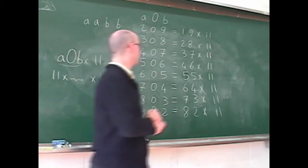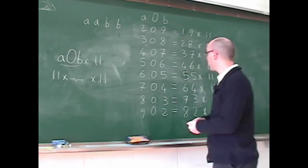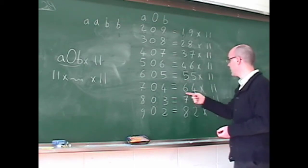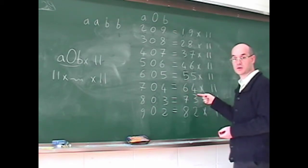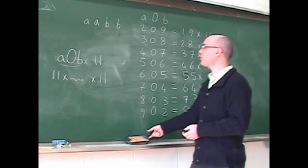So let's check it out: 19 is not a square, 28 is not a square, 37 is not a square, 46 is not a square, 55 is not a square, 64 is a square, 73 is not, 82 is not a square.